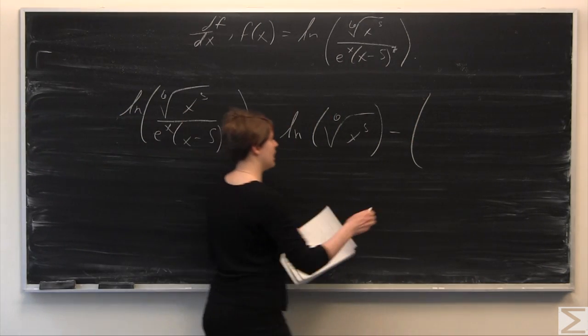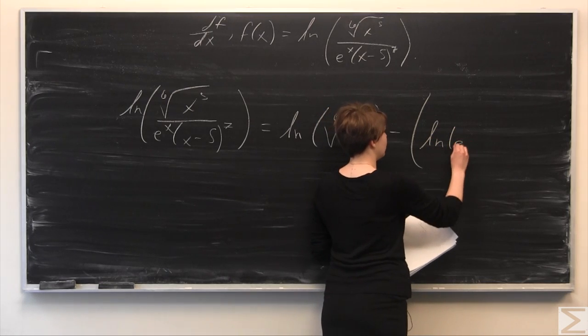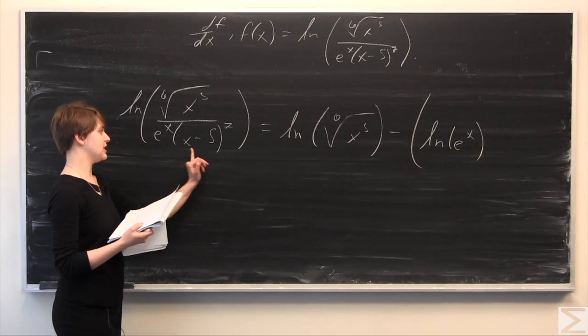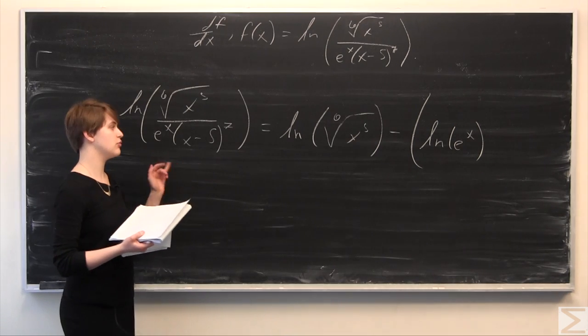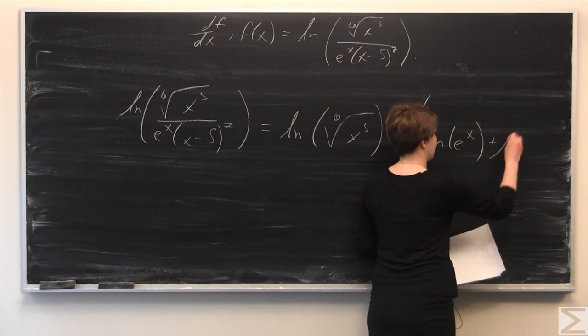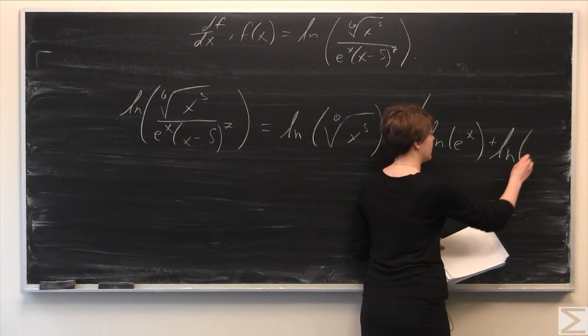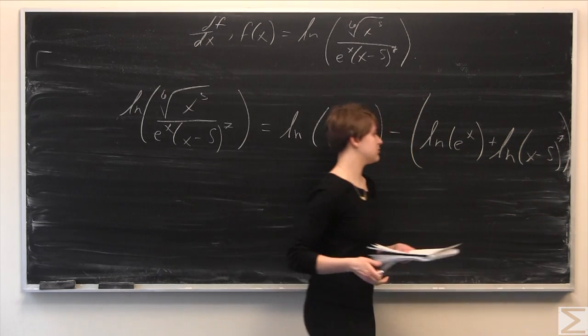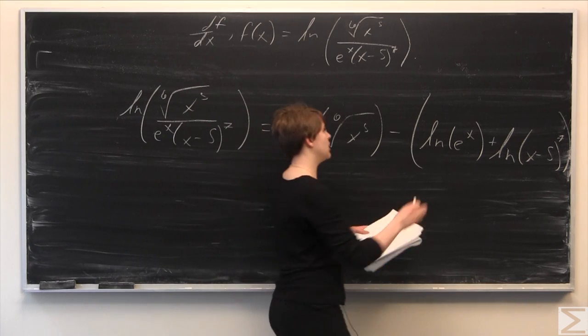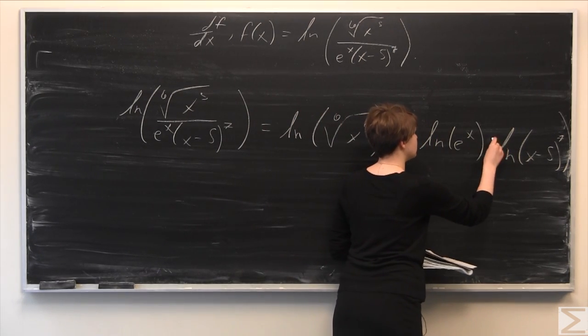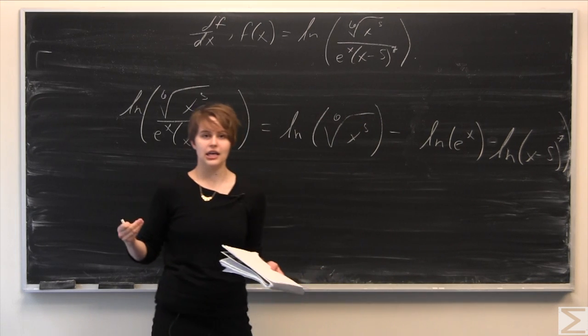We're going to subtract ln of e to the x, and then using the fact that we're multiplying e to the x times x minus 5 to the seventh, we're just going to add the logarithm, so we add ln of x minus 5 to the seventh. We're subtracting out that entire quantity, so we can distribute that negative sign. I'll erase this parenthesis, distribute the negative so these both become negative.